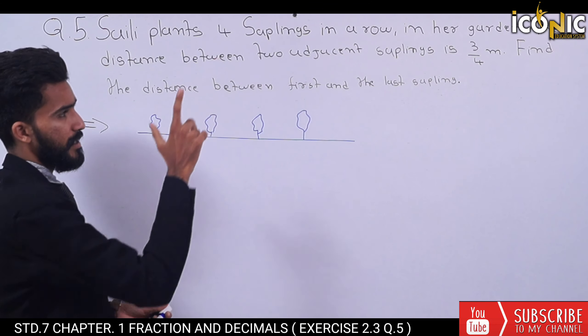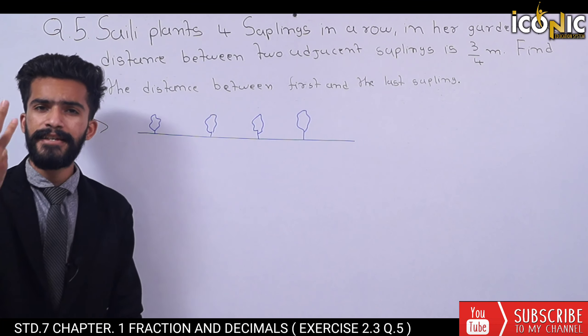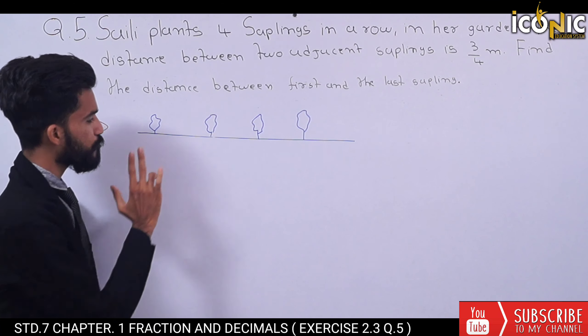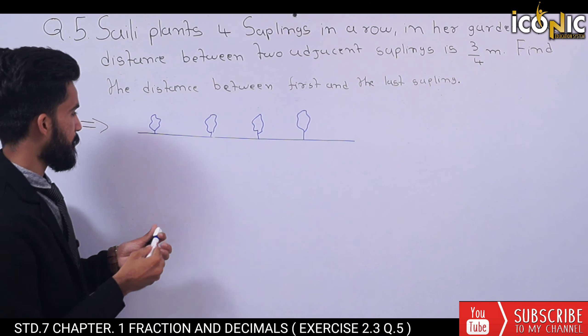distance between two adjacent saplings, which is 3/4. Adjacent means one after another - the distance between these two.